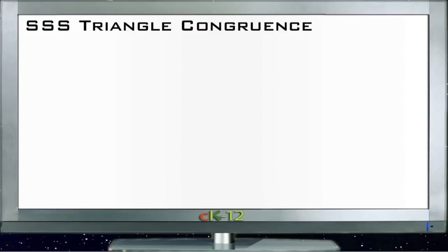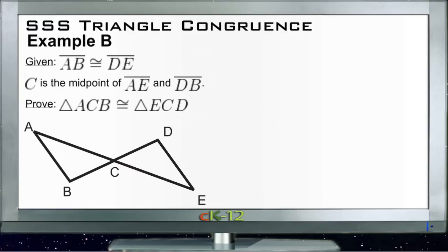Let's take a look at Example B. Example B asks us to write a two-column proof, given that line AB is congruent with DE and that C is the midpoint of AE and DB. If C is the midpoint of AE, that tells us AC is congruent with CE, and BC is congruent with CD, because the midpoint divides each of those lines into equal parts.